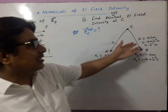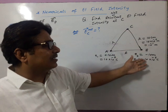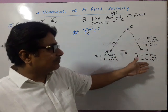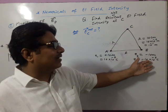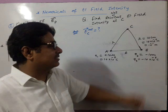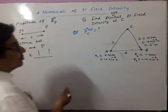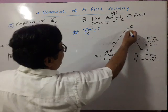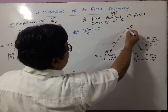Now change cm into m, and micro into simple numeric value. 10 cm equals 10 to the power minus 1 meter, and 10 micro coulomb equals 10 to the power minus 6 coulomb. If it is minus, put minus. Our question is we are finding electric field intensity at C.